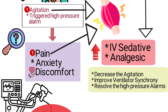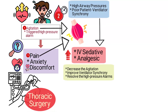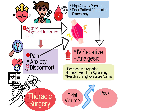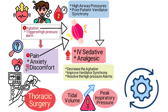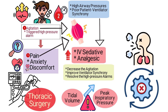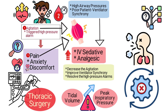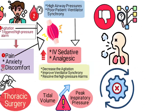Treating the underlying discomfort should resolve the high blood pressure. Increasing the tidal volume would raise the patient's peak inspiratory pressure, which would worsen the issue instead of solving it. And changing the ventilator mode won't address the root cause of the patient's agitation — in fact, it could increase the patient's work of breathing and exacerbate his discomfort.